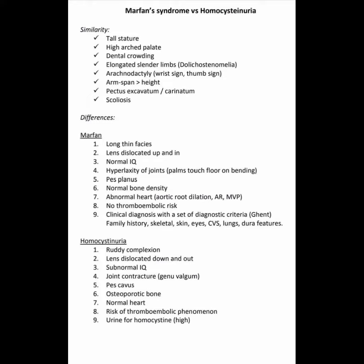Differences found in Marfan syndrome but not in Homocystinuria: long thin face, lens dislocated upwards and inwards, normal IQ, hyperlaxity of the joints, palms touch floor on bending, pes planus, normal bone density, and abnormal heart. The cardiac defects are aortic root dilatation, aortic regurgitation, and mitral valve prolapse, with no thromboembolic risk.